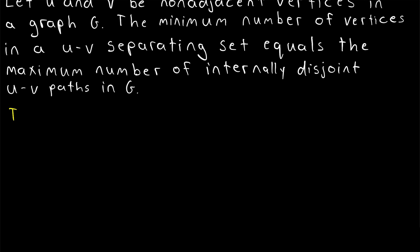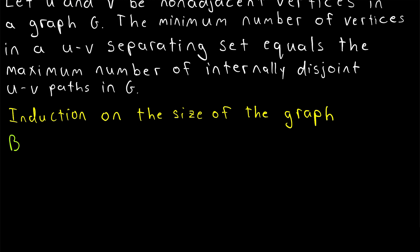Now we're going to get into the proof, and as it turns out, this is going to be a proof by induction. What do you think we're going to use induction on? We're going to use induction on the size of the graph. Thus, the basis step of our induction proof is to prove that the result is true for all graphs that have a size of zero.